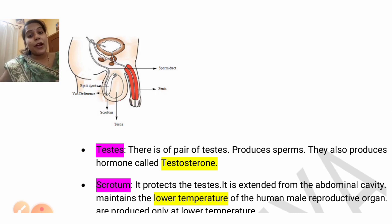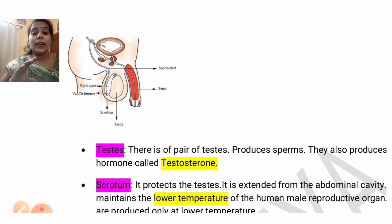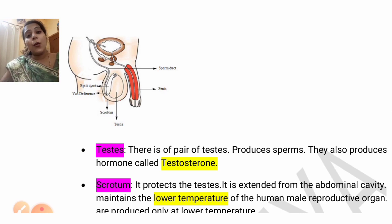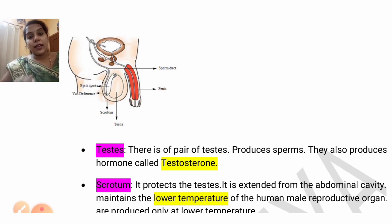In this part, you have sexual reproduction, pollination, self-pollination, cross-pollination, fertilization, male gametes, and female gametes. I am going to start with the sexual reproduction in human beings — sexual reproduction in human beings.